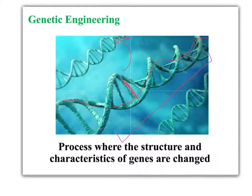Genetic engineering takes this a step further by altering the DNA itself. Genetic diseases affect large amounts of people, for instance cystic fibrosis and muscular dystrophy. Other diseases, such as diabetes, are also treated using genetically modified organisms like yeast. It's hoped that by finding out all the genes that humans are made of, scientists will be able to control them.